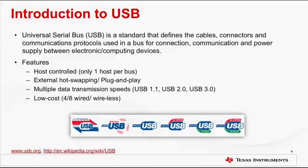USB also supports multiple data transmission speeds. It has evolved from USB 1.1 to 3 now. With the exception of USB 3, which uses 8 wires, USB uses a 4-wire interface. One of the cool features of USB is external hot swapping, also known as plug and play. It allows end users to connect and disconnect from the host while the bus is powered on. USB offers a low-cost data transmission alternative, and wireless USB can be used for wireless data transmission.